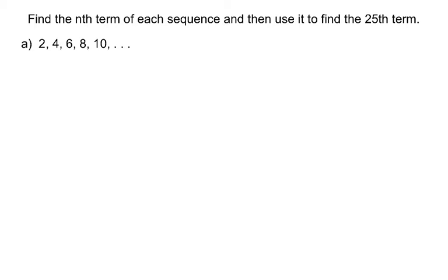First of all, we want to determine what type of sequence it is. We're looking for our pattern — what's happening as we go from one term to the next. In this case, we see that we're adding 2 each time. That implies this is an arithmetic sequence, and we know that d is equal to 2. That's our common difference.